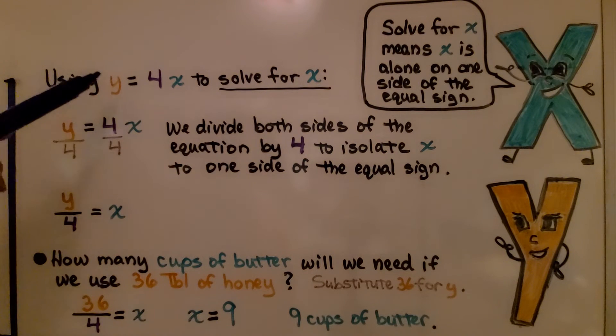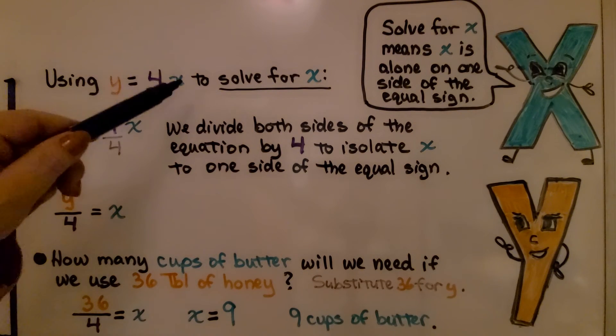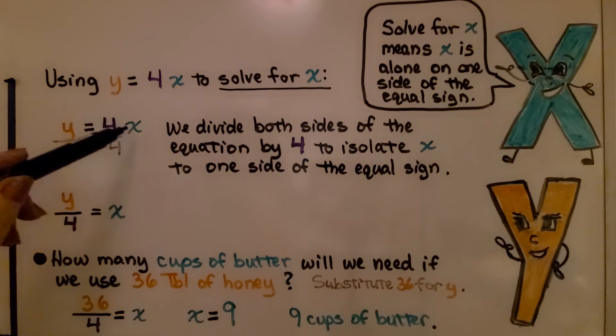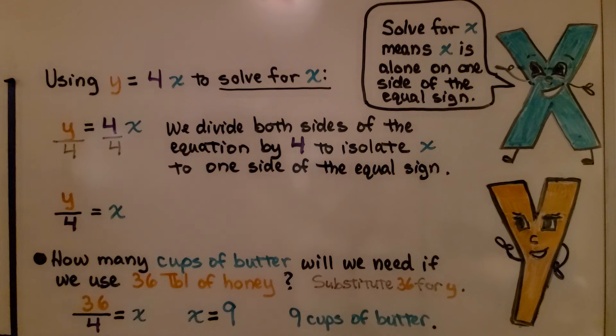Using y is equal to 4x to solve for x, we divide both sides of the equation by 4 to isolate the x to one side of the equal sign. We get y divided by 4 is equal to x, because 4 over 4 is the same numerator and denominator, so that's just a 1 for like a 1x. We don't need to write the 1.